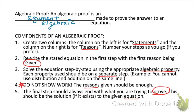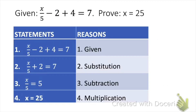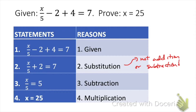We're always going to be given the first part — what we're starting with — and we're also going to be given the end, which is what we're trying to prove. Here are a couple of examples of algebraic proofs. Notice that we have a given statement: x over 5 minus 2 plus 4 equals 7, and we're trying to prove x equals 25. Notice all the statements on the left and all the reasons on the right. In step two, we use substitution since we're just combining negative 2 plus 4 on the left-hand side — that's substitution, not addition or subtraction. Remember, those properties only work if we're applying the operation to both sides of the equation.